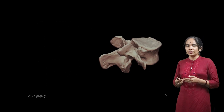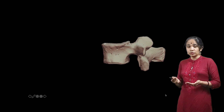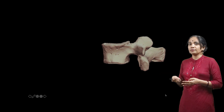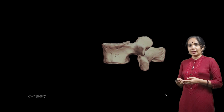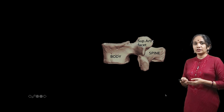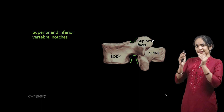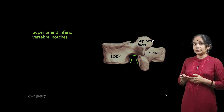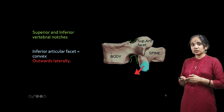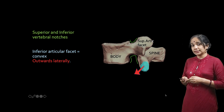Let us tilt it all around and appreciate the shape. The vertebrae are irregular bones — we classify bones as long, short, or irregular, and the vertebrae belong to the irregular bone category. Labeling the parts: the body, the superior articular facet, the spine, and the superior and inferior vertebral notches. The pedicle attaches slightly below the superior border, which is why we have both a superior and inferior vertebral notch. The inferior vertebral facet is directed outwards and laterally.